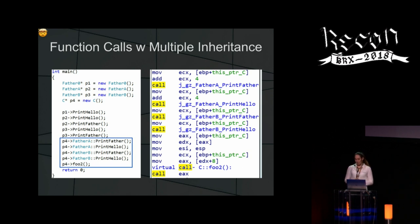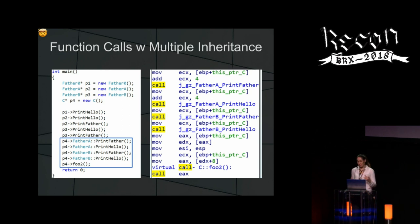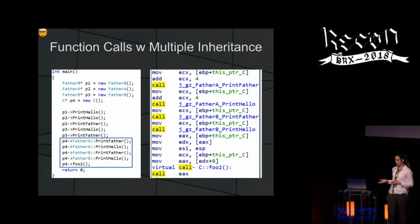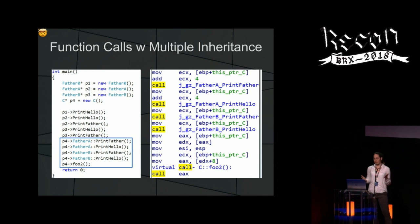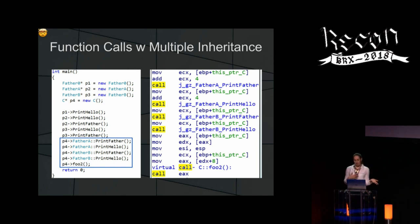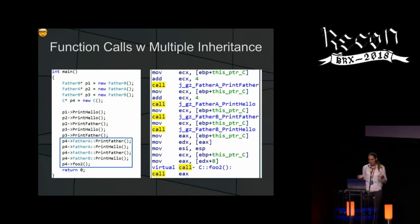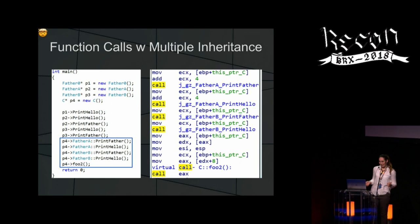Function calls with multiple inheritance. After the object is allocated, you also want to call its functions. In multiple inheritance you need to explicitly say which function you want to use, since you have two parent objects that both implement virtual functions. You say explicitly who you want to call — father A print-father or father B print-father. In the assembly you can see it's just a regular function call with no use of the Vtable, which makes our life a little easier.